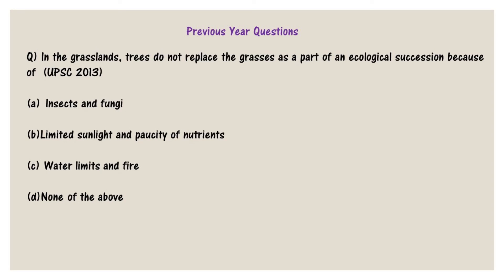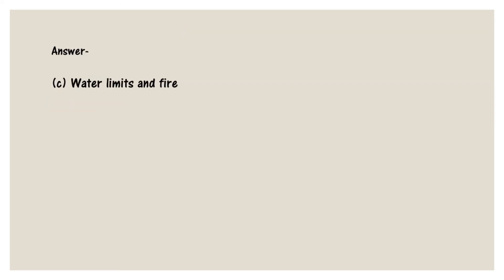UPSC 2013: In the grasslands, trees do not replace the grasses as part of an ecological succession because of: (a) insects and fungi, (b) limited sunlight and paucity of nutrients, (c) water limits and fire, (d) none of the above. The answer is (c) — water limits and fire. Hope you understood this lecture. Go through this lecture again and make short notes which will be helpful in your revision. Thank you.